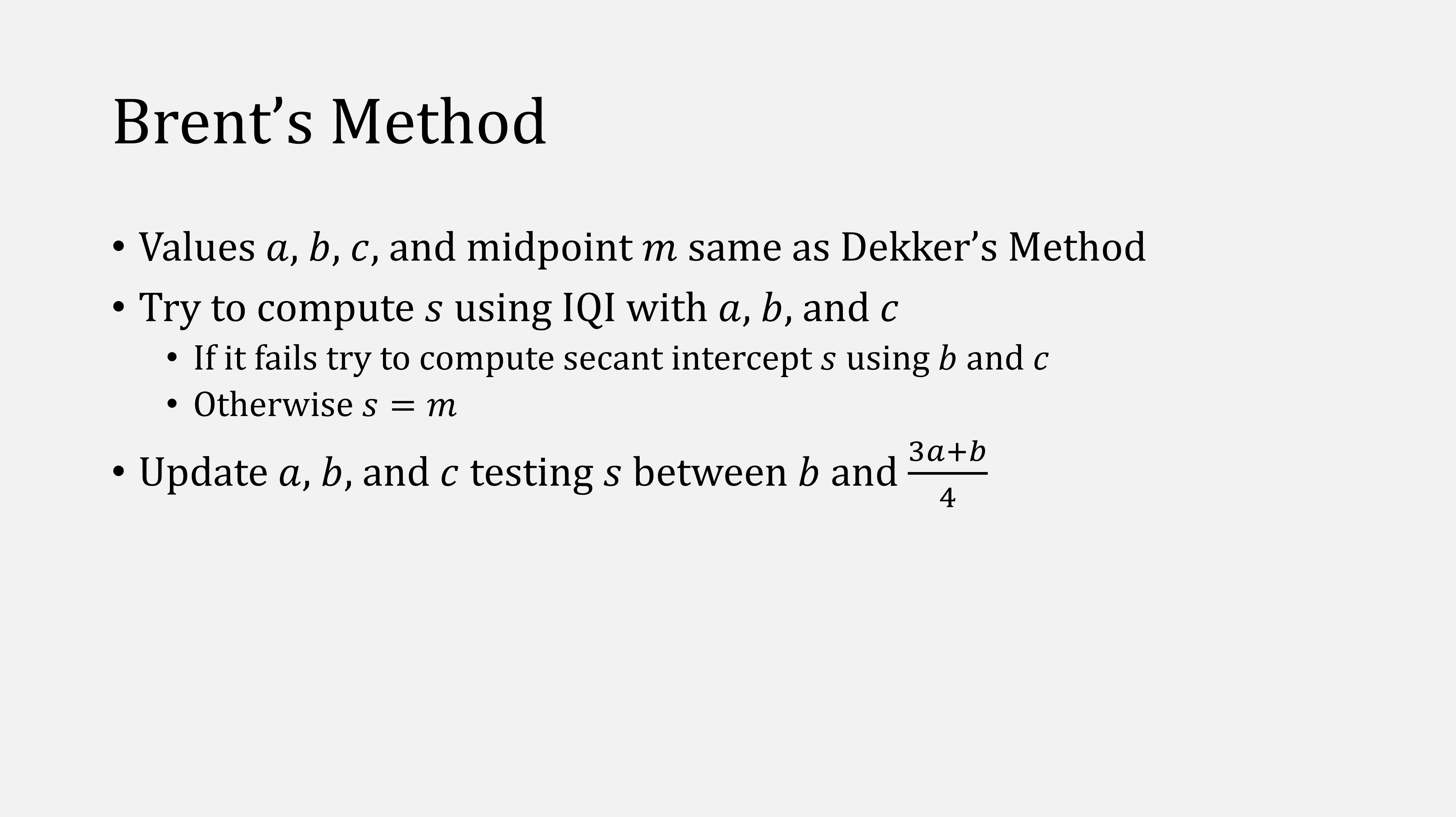Then we update our A, B, and C points. Only now our test for S is between B and 3 times A plus B over 4. This gives us a little bit more room for the inverse quadratic. Then we repeat the process until B minus A is less than some epsilon, the same as Dekker's method. Only now we add another condition. If F of B or S is equal to 0, we'll stop. This saves us a lot of iterations.